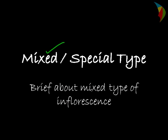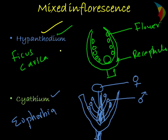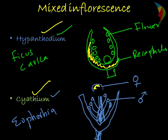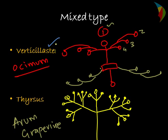In summary, in the mixed type of inflorescences we have: the hypanthodium type with Ficus as example, where flowers are arranged inside the receptacle; the cyathium type found in Euphorbia, where the female flower is in between and male flowers are lateral; the verticillaster type where the main flower is in between and lateral flowers open after, with Ocimum as example; and the thyrsus type with Arum or grapevine as example, showing a triflower structure. In the coming session we will discuss about the root and root structure. Thank you.